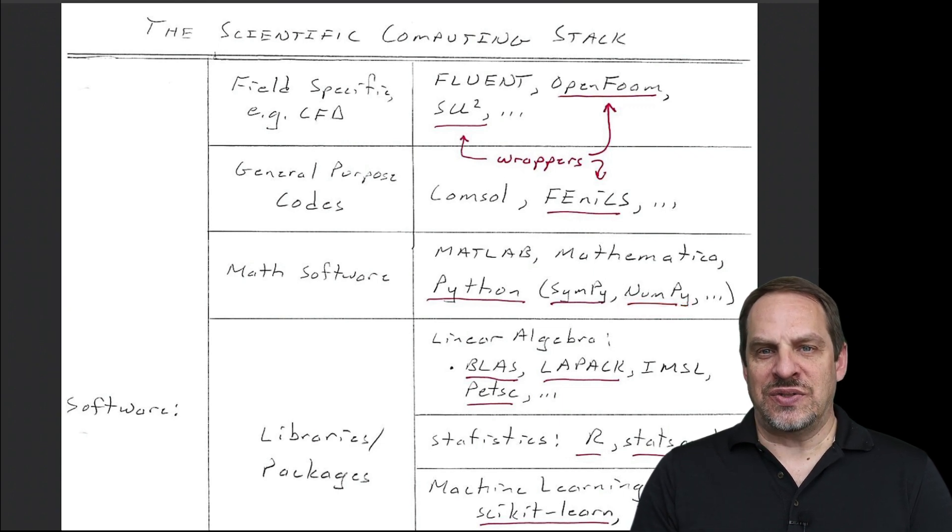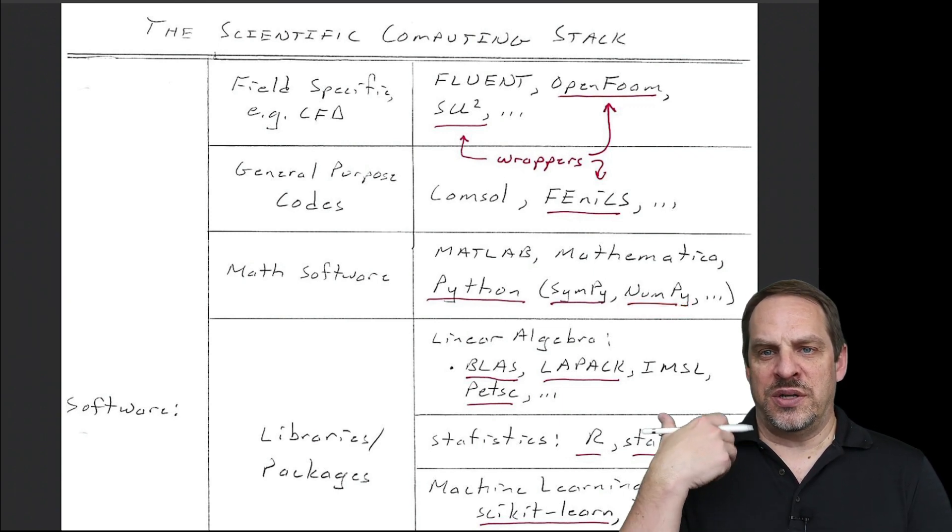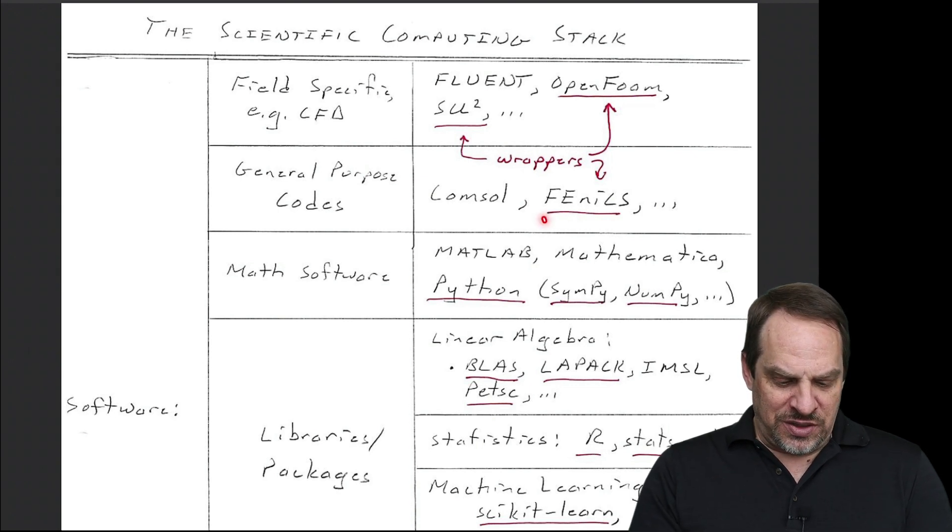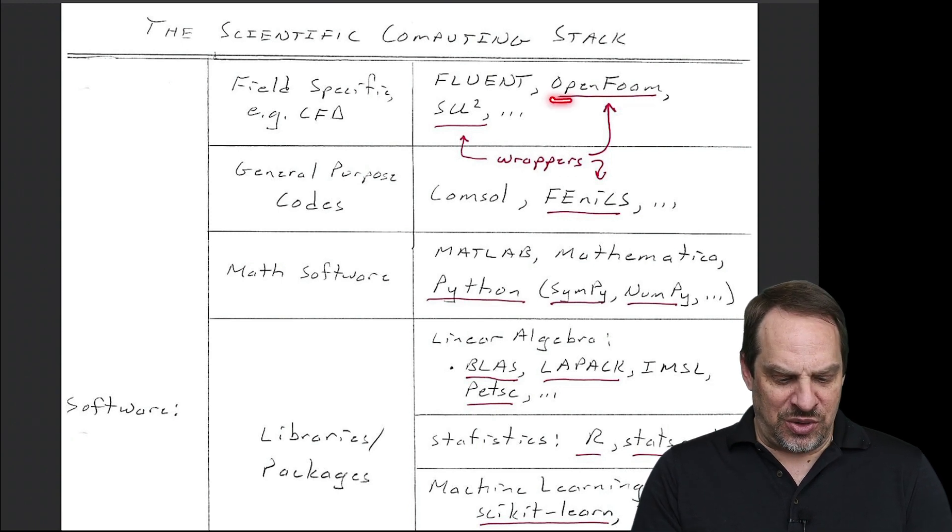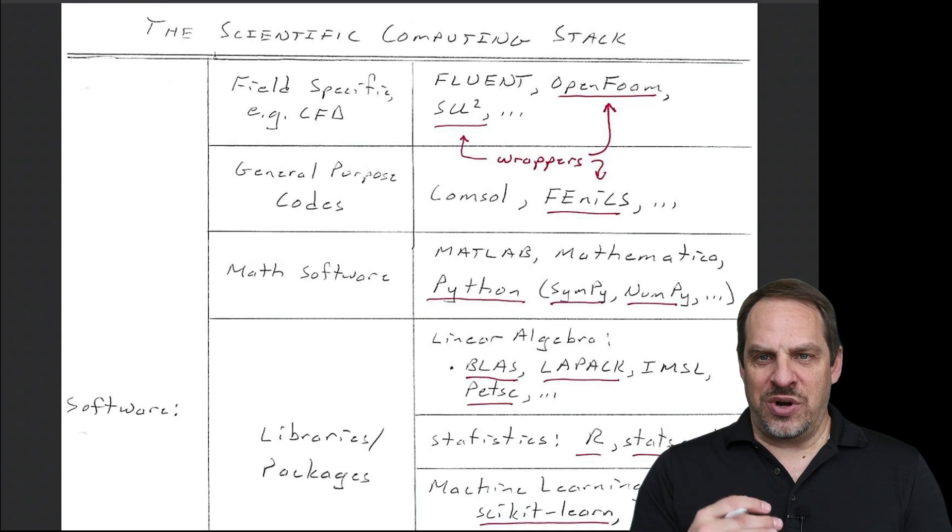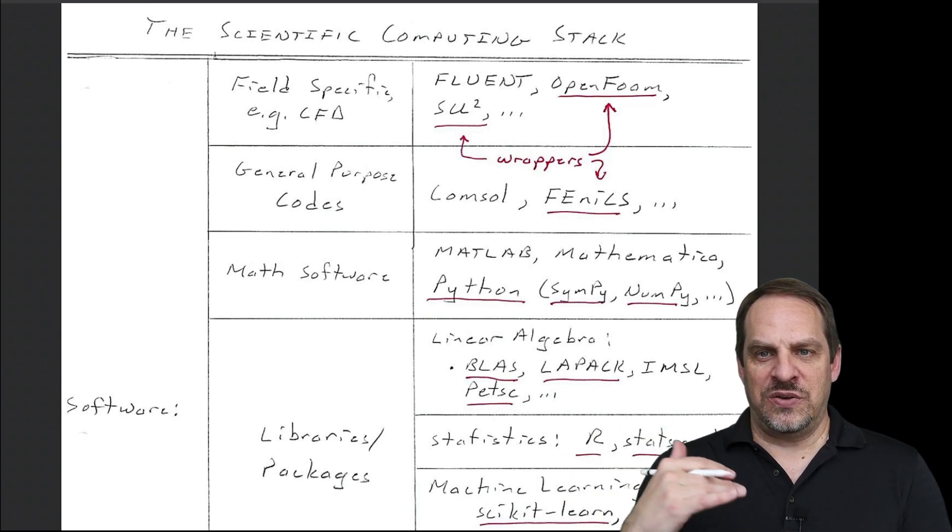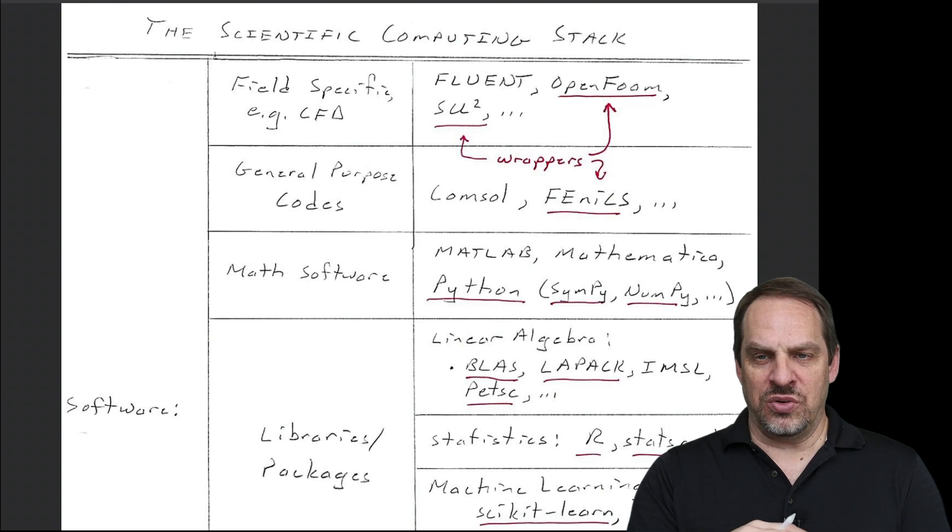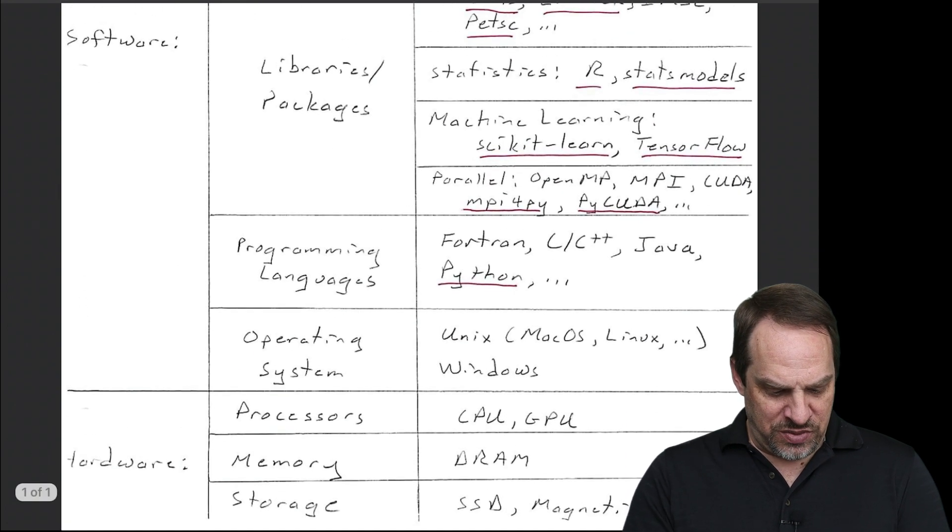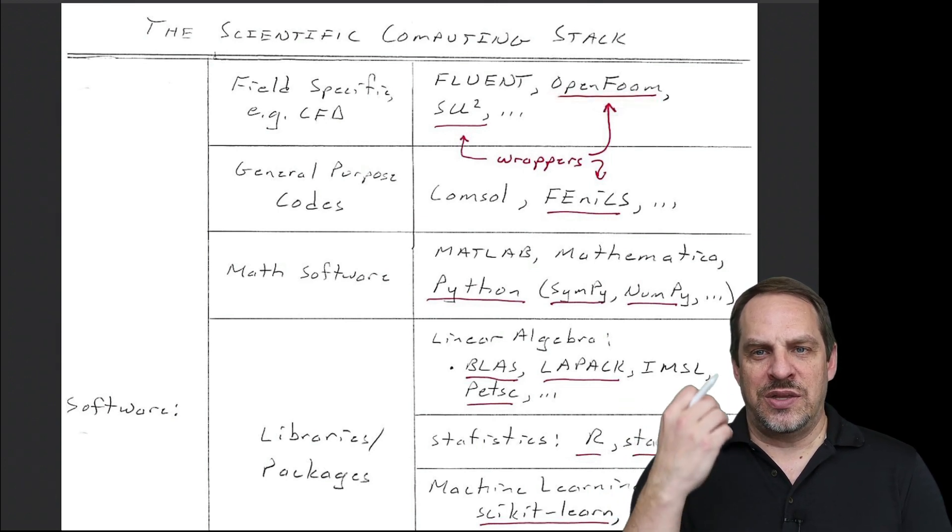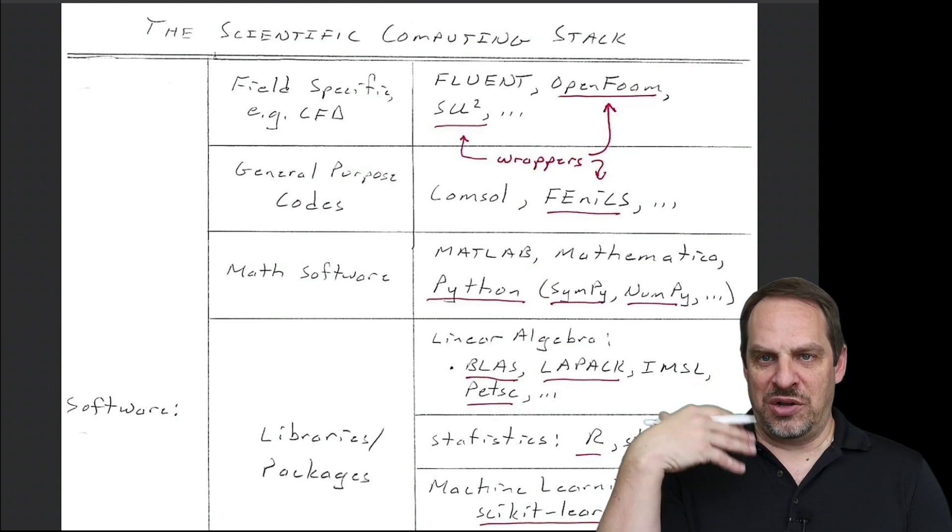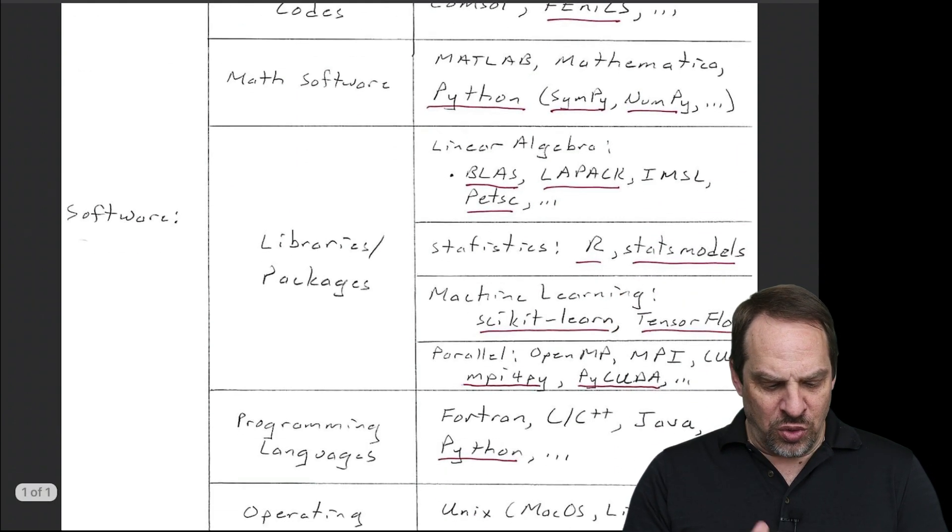Move up the stack. There are equivalents to MATLAB and Mathematica, even for symbolic mathematics like Mathematica is so good at. And then there's NumPy and SciPy and so forth for doing linear algebra and scientific types of operations. Phoenix is not written originally in Python, but it now has a Python wrapper. Same thing with OpenFOAM, SU squared. So the point here is that you can engage with the scientific computing stack from a Python point of view at any level above the operating system.